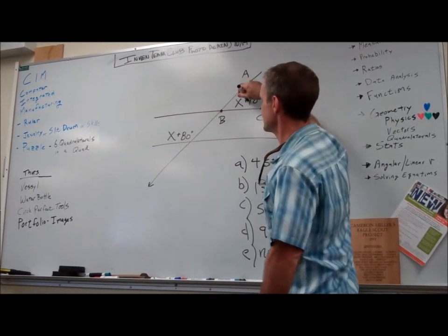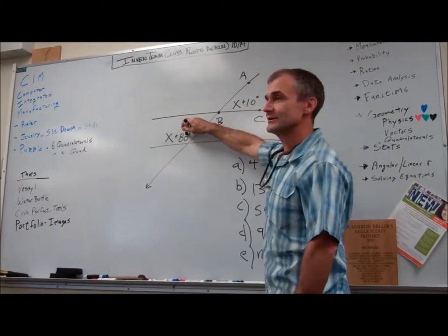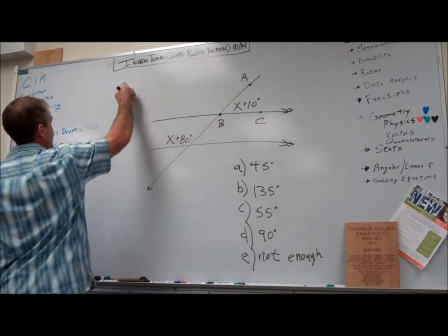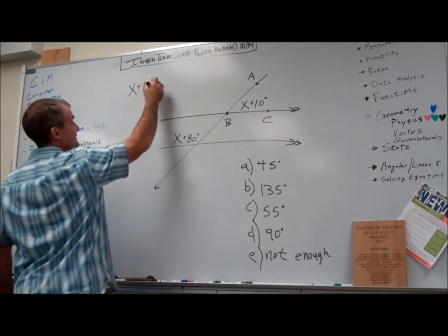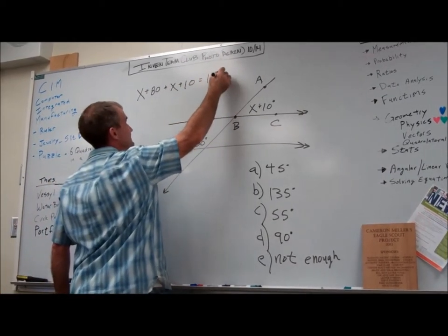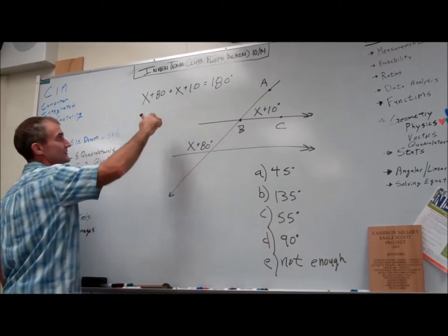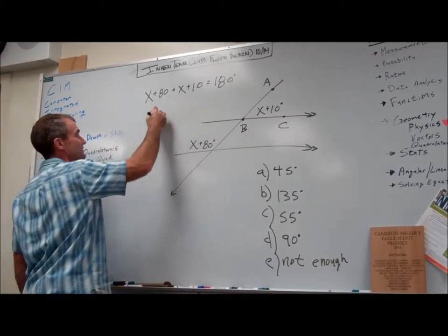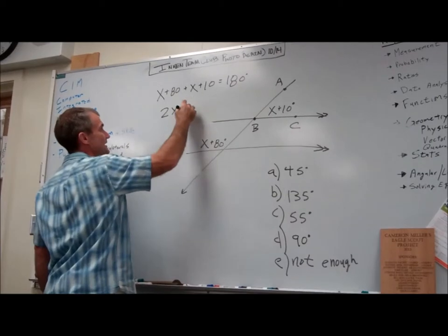Jesse, it means this and this have to equal 180. So I set up the equation. One angle plus the other angle has to equal 180 degrees. And then I just solve. One of these and another one is two of them. 80 and 10 is 90.